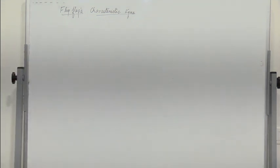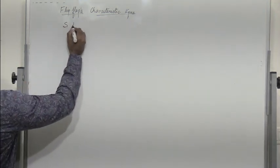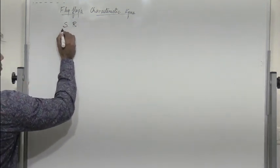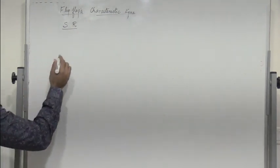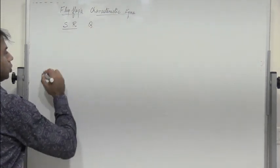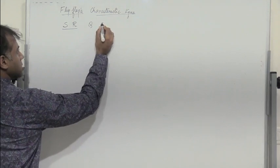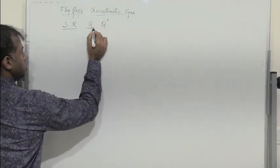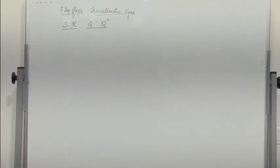Let's obtain the characteristic equations of the flip-flops. We begin with the SR flip-flop. S and R are the inputs. Let Q be the current state and Q+ be the next state, which is obtained when a clock pulse is given or when the flip-flop is triggered.